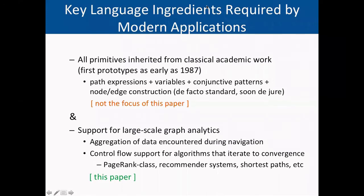GSQL includes all primitives inherited from classical academic work, which typically focused on specifying complex navigational patterns against the graph. But rather than focusing on that, we focus on GSQL's novel design choices for supporting large-scale graph analytics — in particular, aggregation of data encountered during navigation, and control flow support for algorithms that iterate to convergence, such as PageRank-class algorithms, recommender systems, shortest path computations, etc.